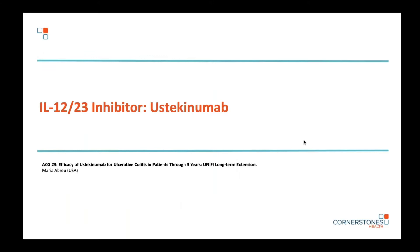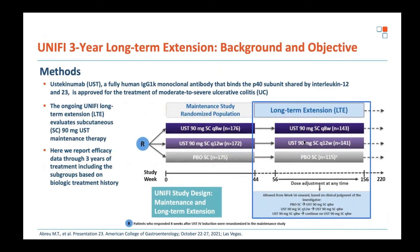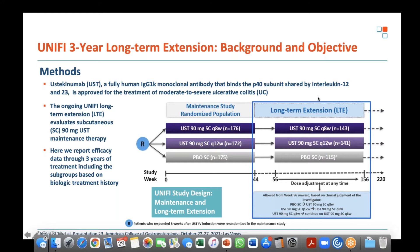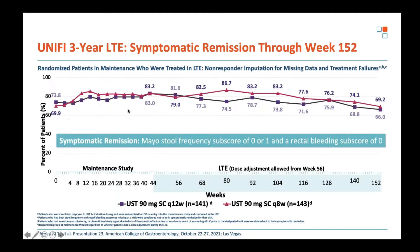Moving to long-term ustekinumab data from UNIFI — the ulcerative colitis study — and specifically the open label extension outcomes. Whether looking at non-responder imputation or observed analysis, ustekinumab performs well over time with very little drop-off. In SEAVIEW, adalimumab patients started dropping off towards the end, which fits with immunogenicity. There is very good persistence with ustekinumab in UC.